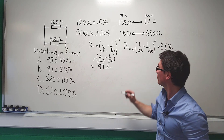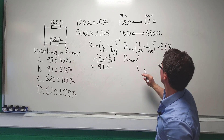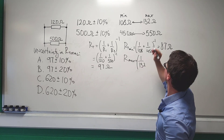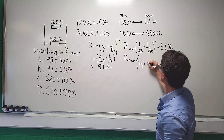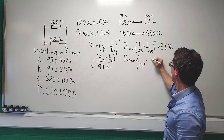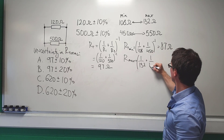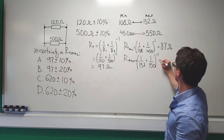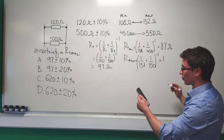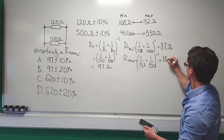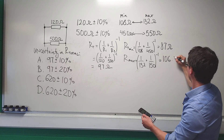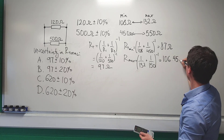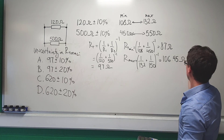The maximum total resistance is given by (1/132 + 1/550) to the power of negative 1, which gives us approximately 106.45 ohms.